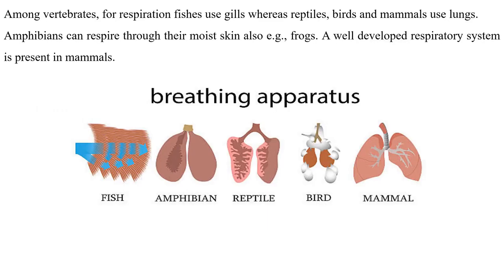Among vertebrates, fishes use gills for respiration, whereas reptiles, birds, and mammals use lungs. Amphibians can also respire through their moist skin — for example, frogs. A well-developed respiratory system is present in mammals.